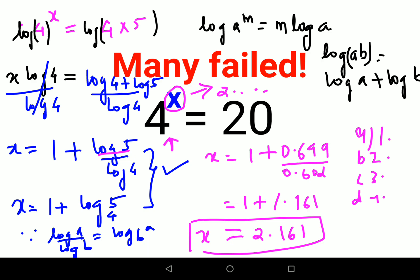Because as we know that 4 raised to 2 is 16 and 4 raised to 3 is 64. So if it is 20, the value of x will lie between 2 and 3.